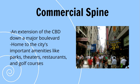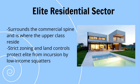The commercial spine is an extension of the CBD down a major boulevard, home to the city's important amenities like parks, theaters, restaurants, and golf courses. The elite residential sector surrounds the commercial spine and is where the upper class reside. Strict zoning and land controls protect the elite from incursion by low-income squatters.